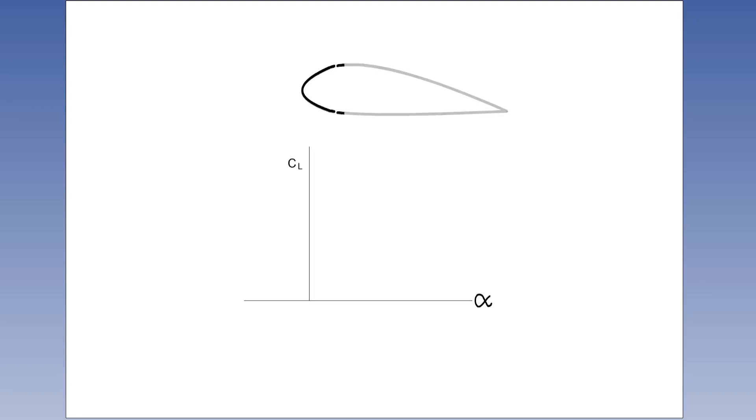Likewise, a thick section, greater camber, particularly near the leading edge, and a forward point of maximum thickness and camber are all more conducive to a gradual, more gentle stall than the opposite characteristics.